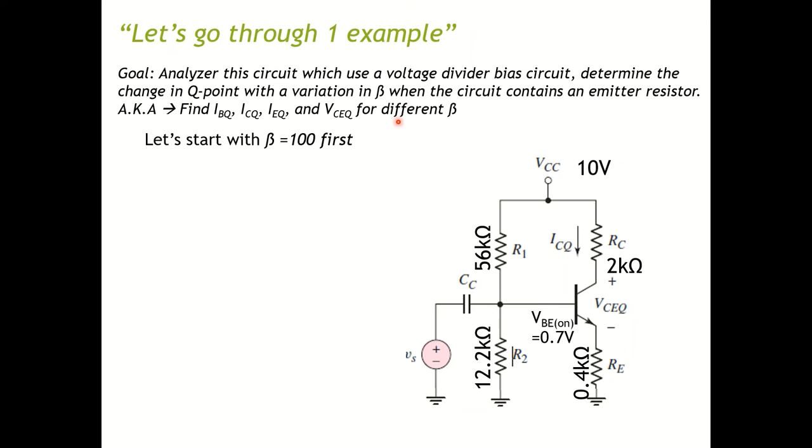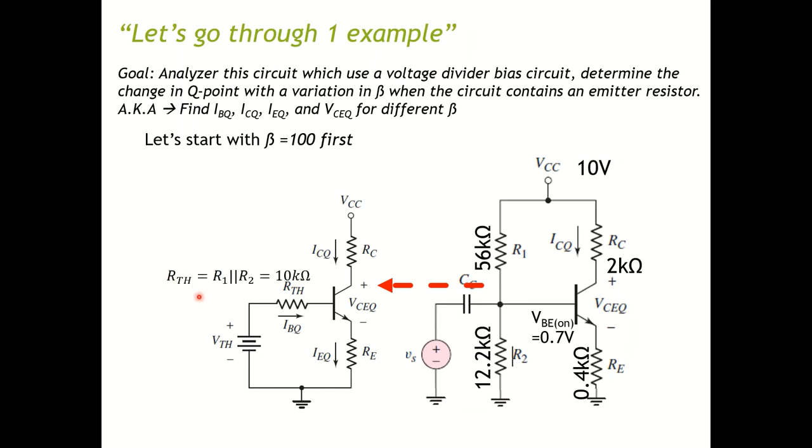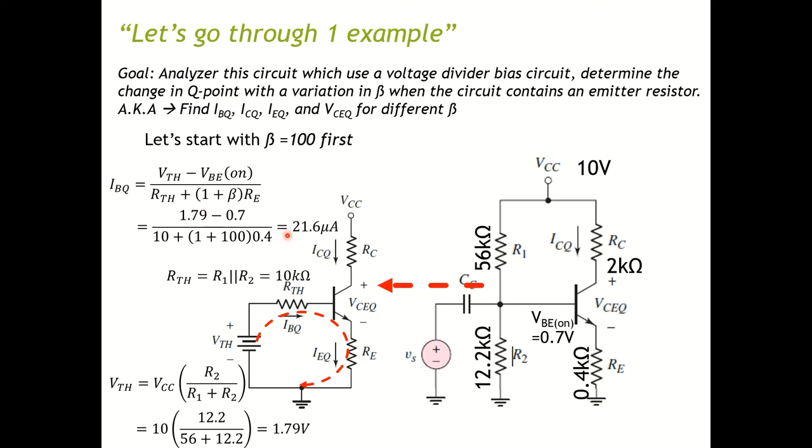Let's start with β equals 100. First of all, we convert this branch of the circuit into the Thevenin equivalent. Of course you can calculate the Thevenin resistor and the Thevenin voltage. Then you analyze this loop here, or you can plug in the equation we derived in the previous slide.